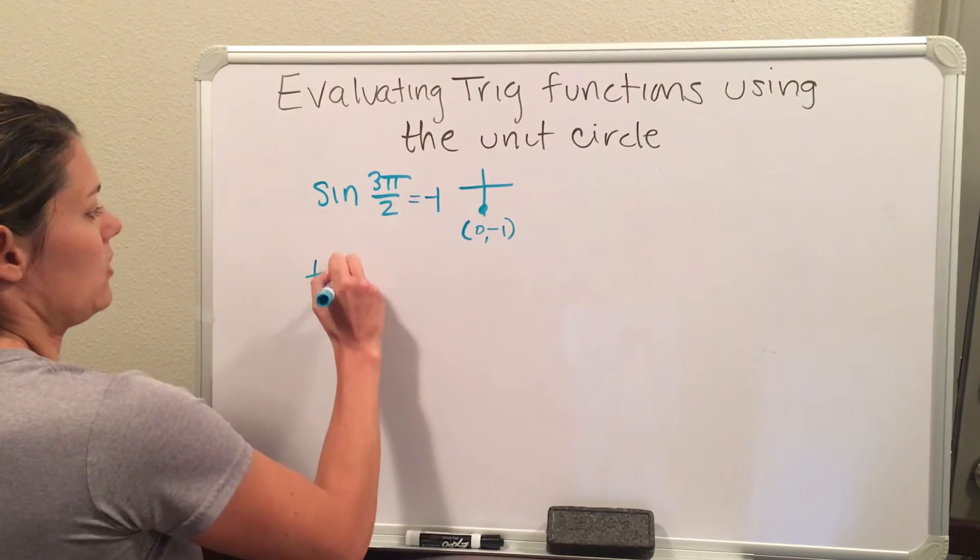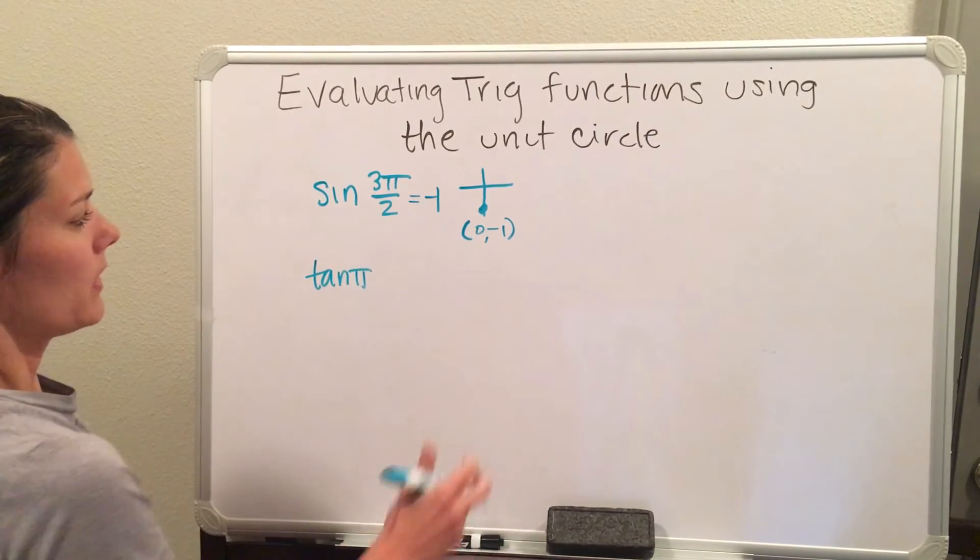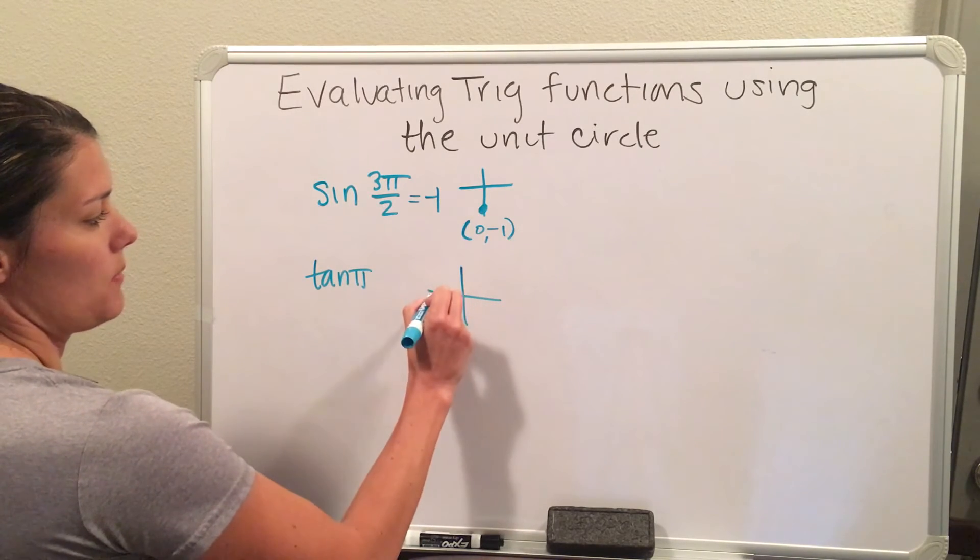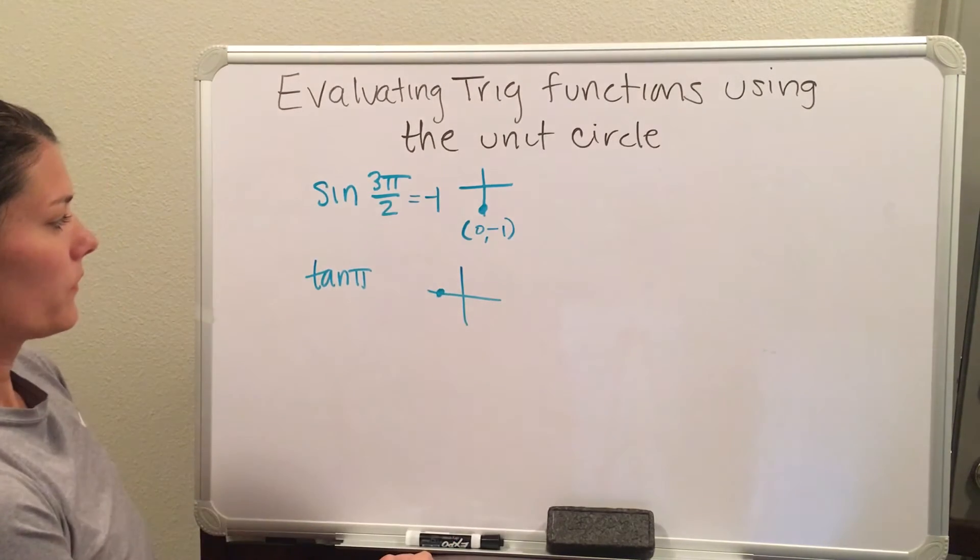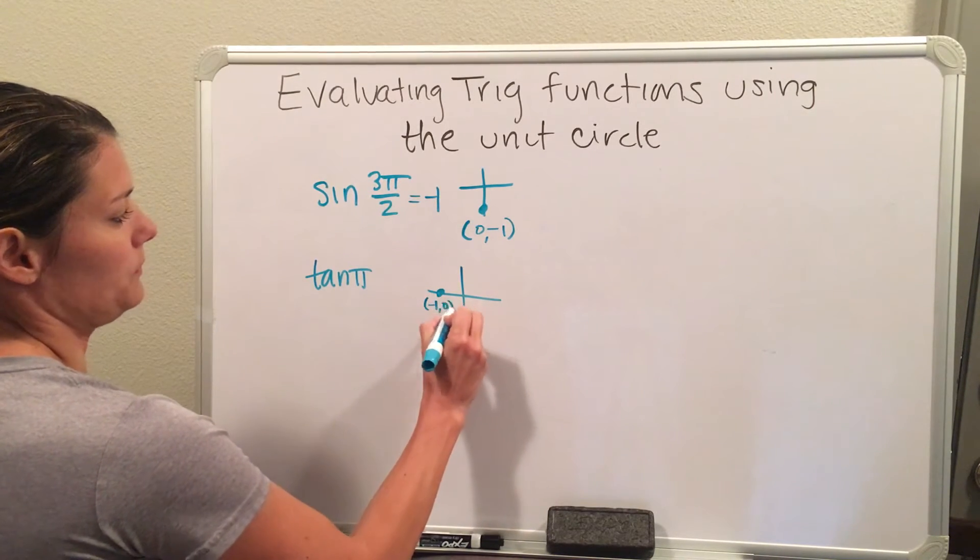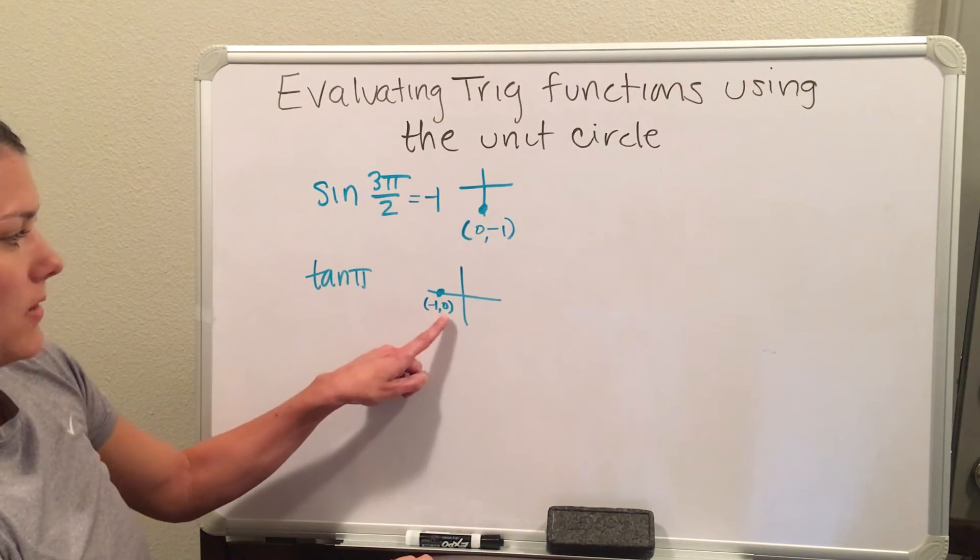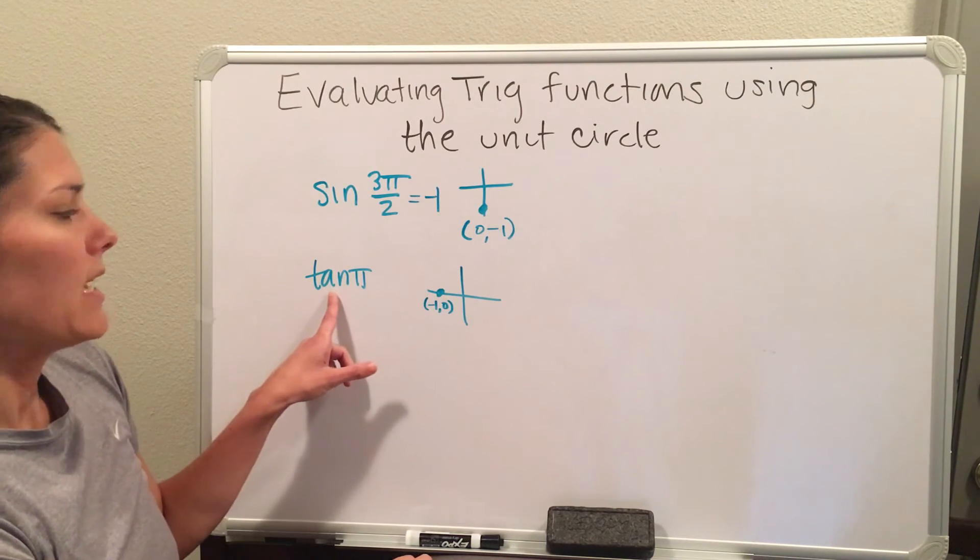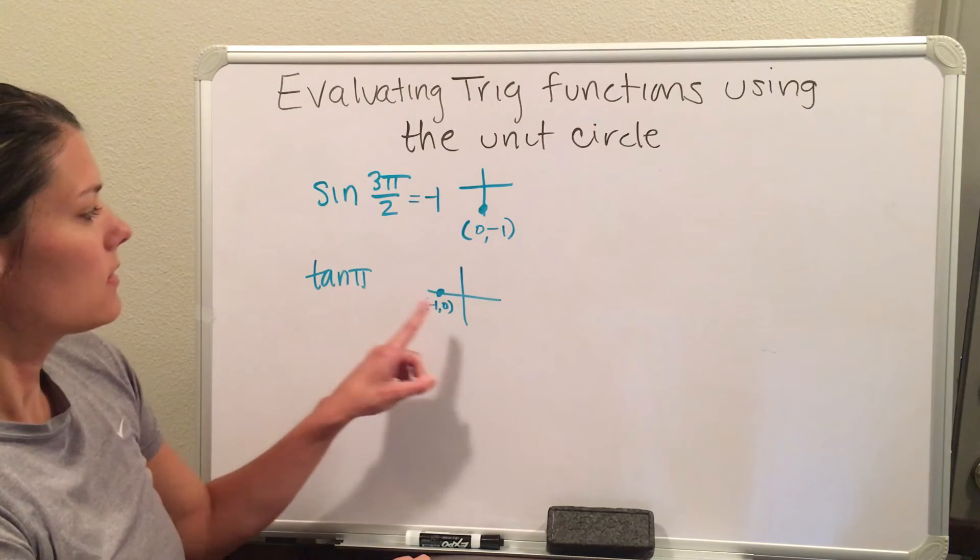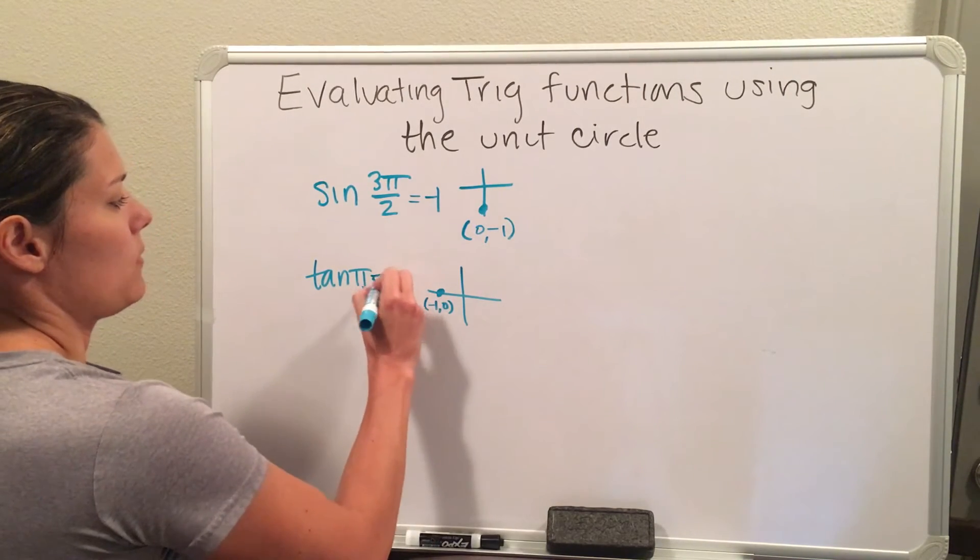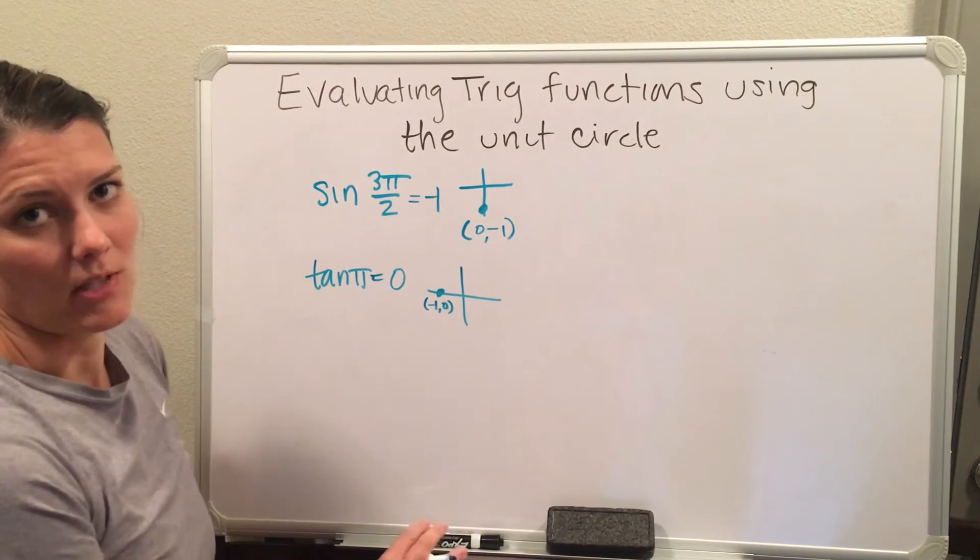I can also try tangent of π. π is also one of my x, y points. π is over here. And this is the point (-1, 0). Now this is cosine and this is sine, so you cannot see tangent from the point. But to get tangent, you can just do y over x. So if I do 0 over -1, I will end up with 0. So 0 will be my answer.